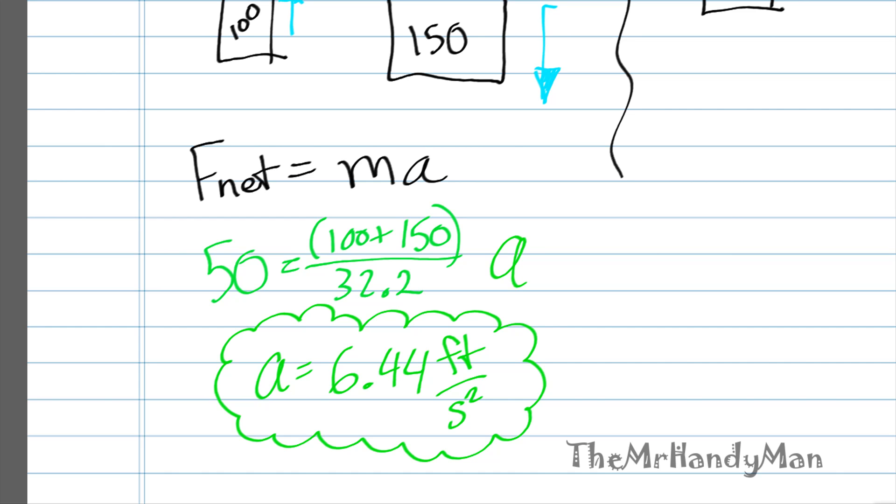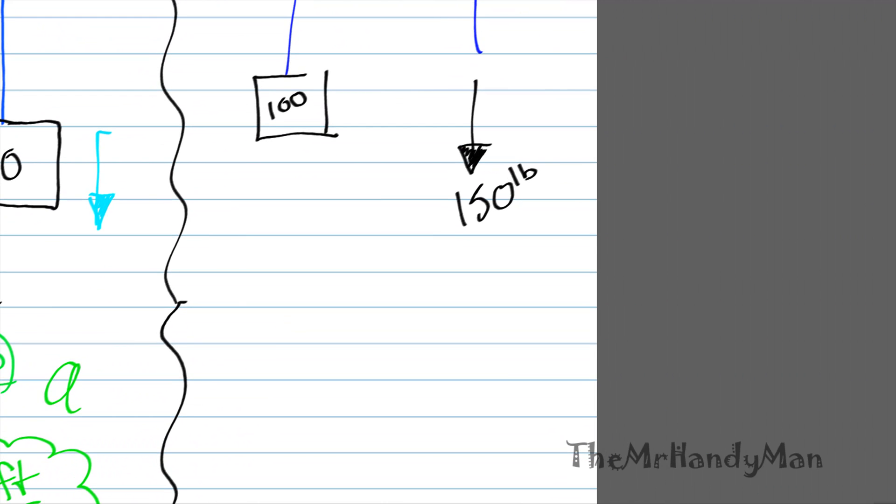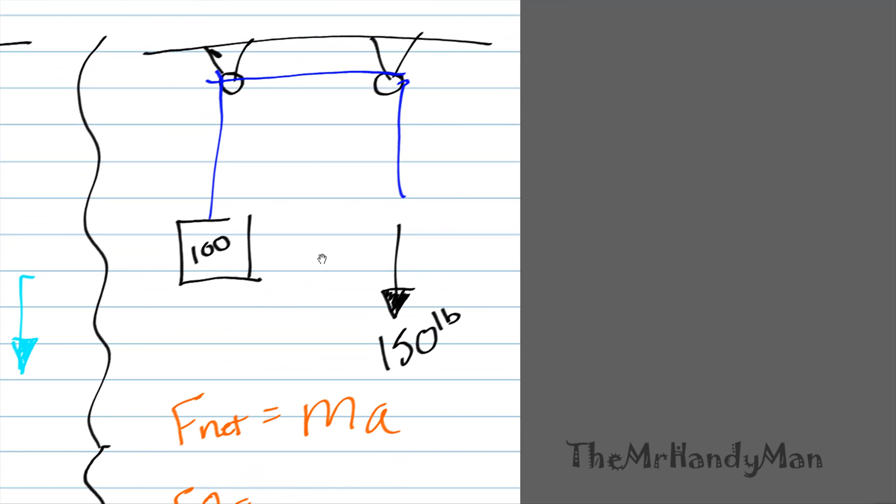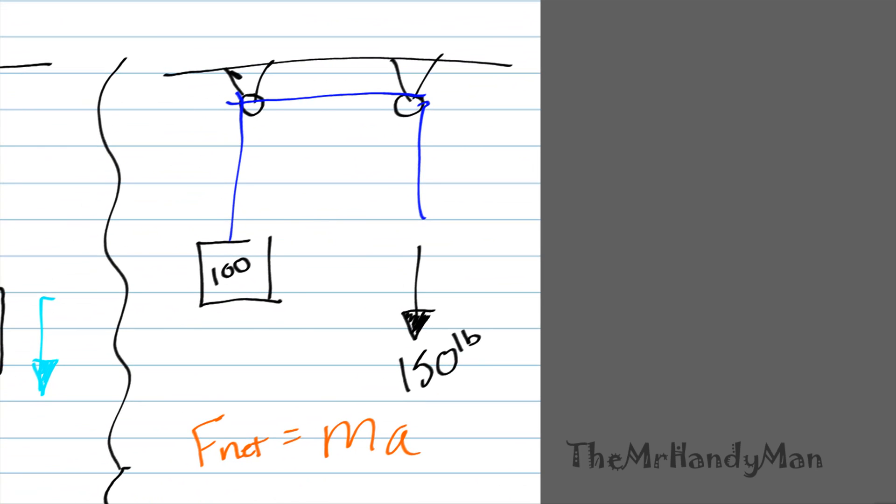With that result, how is this different than our sister situation over here on the right? The sister situation, we still have an F net equals M A. Same situation, the F net is still equal to 50 pounds. However, the difference in this situation is that the total mass is only this 100 pounds right here.